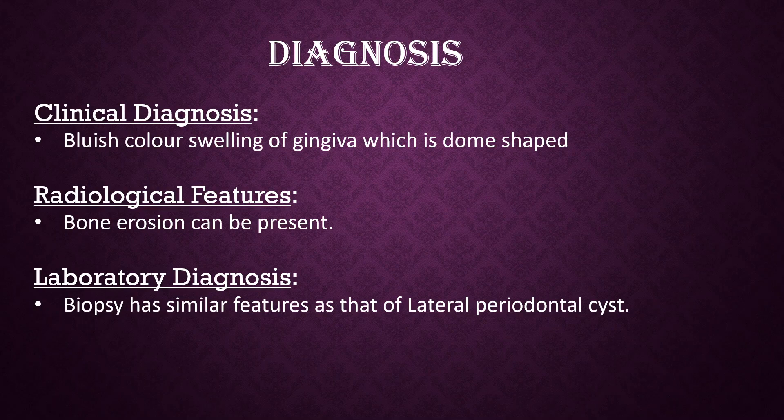Diagnosis. Clinical diagnosis — bluish colored dome-shaped swelling of the gingiva will suggest gingival cyst of adults. Radiological features — bone erosion can be present. Laboratory diagnosis — biopsy has similar features to that of the lateral periodontal cyst.